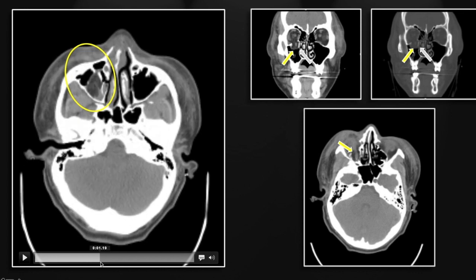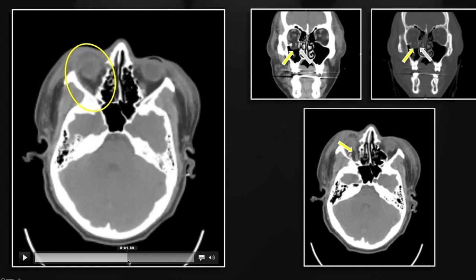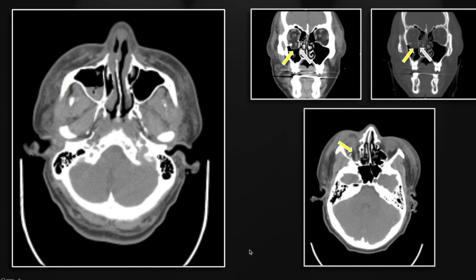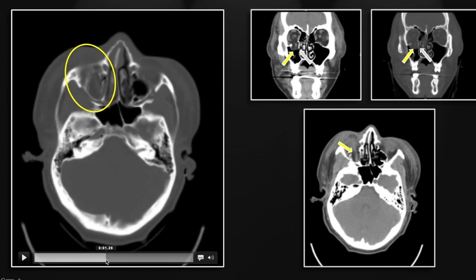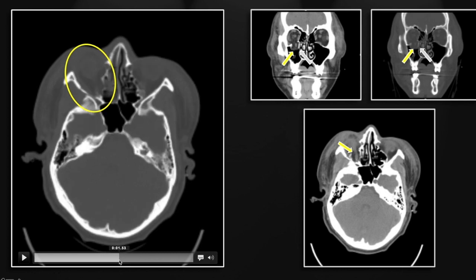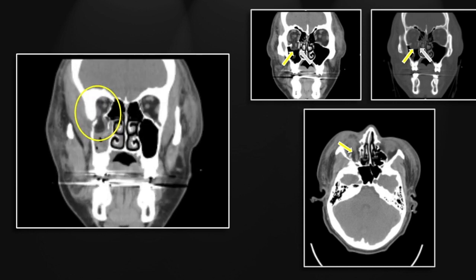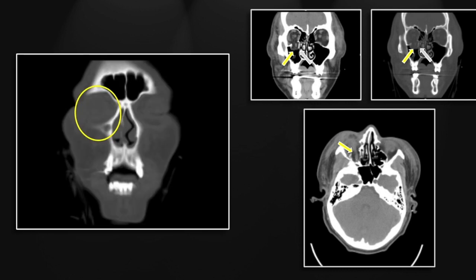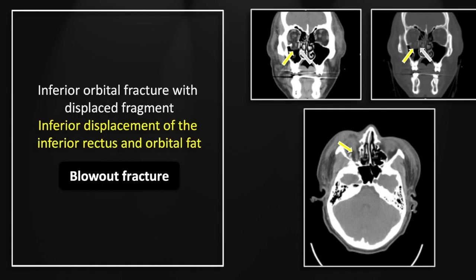You can see fluid in the sinus, the orbital fat herniating down into the sinus, the displaced inferior rectus muscle, and some retrobulbar hemorrhage as well. On the bone window you can see the displaced trapdoor fragment quite nicely in the medial aspect of the maxillary sinus. On the coronal: the herniated fat and herniated inferior rectus muscle, and on the bone windows that displaced orbital floor fragment. That is a classic inferior orbital blowout fracture.